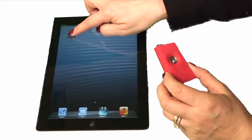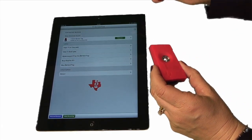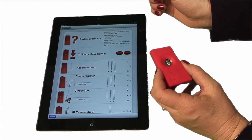First, you download the sensor tag app and you connect the sensor tag. And it's loading the information from all the sensors.